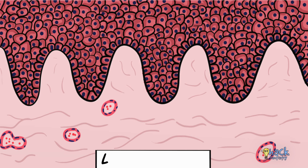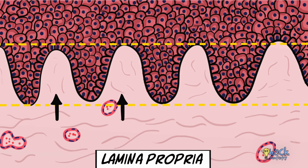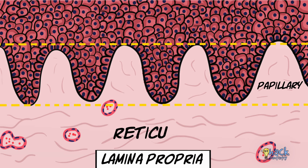Below the epithelium is the lamina propria, or the connective tissue. For descriptive purposes, the lamina propria is divided into a papillary layer associated with the epithelial ridges and a reticular layer below it.